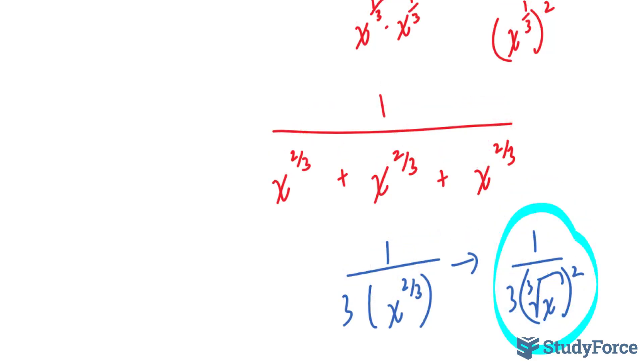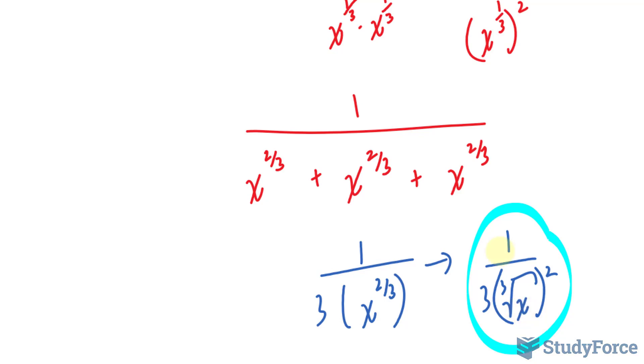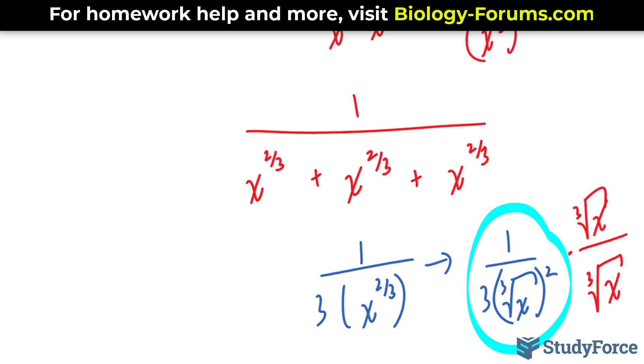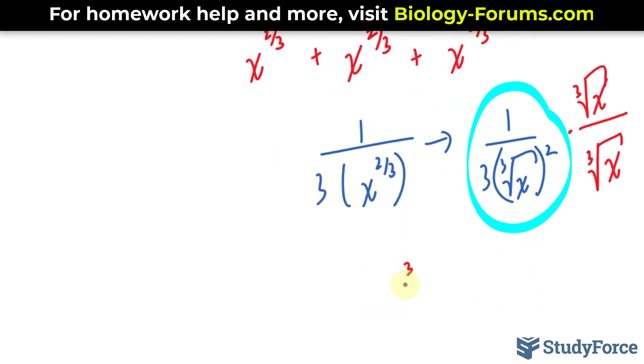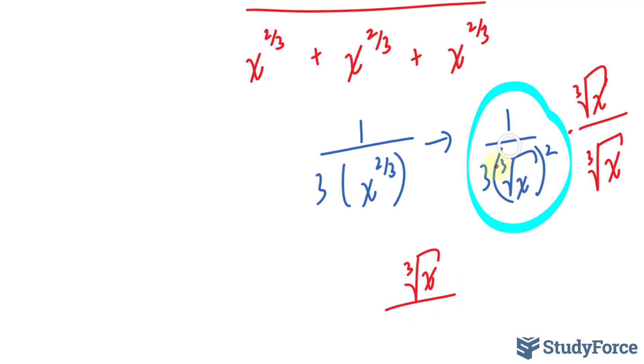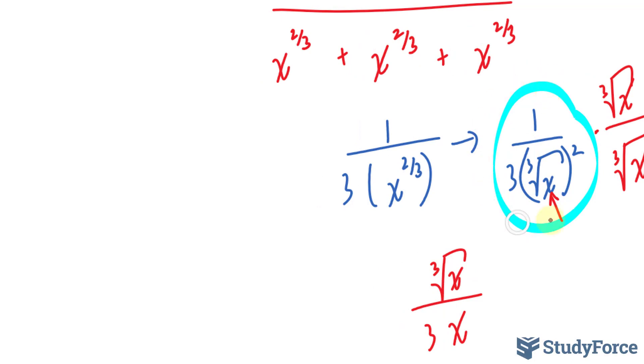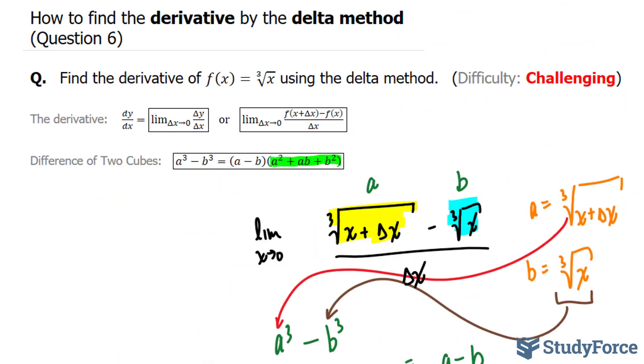Now just before I conclude, some textbooks might want you to rationalize your final answer. And what that means is do not include a radical in the denominator. In case your textbook or your teacher wants that, what you will do at this stage is multiply the top and the bottom by what will cancel out the radical that's at the bottom right now. In other words, I'll multiply this by the cube root of x, the top and the bottom, and look what happens. We end up with the cube root of x at the top, and at the bottom, this factor and this factor will cancel each other out, leaving you with 3 times the radicand. So if the back of your textbook does not give you this, it most likely gives you that. And there you have it. That is how to find the derivative by the delta method.